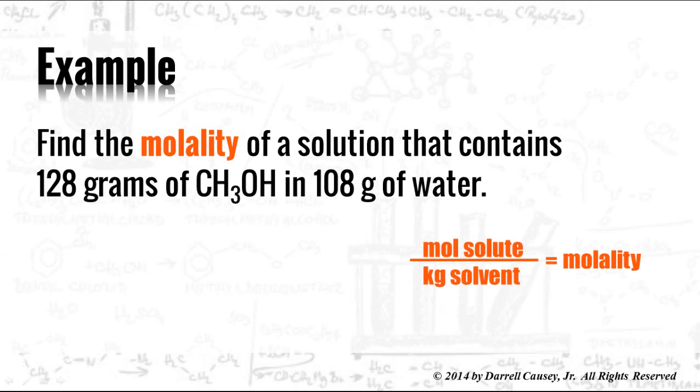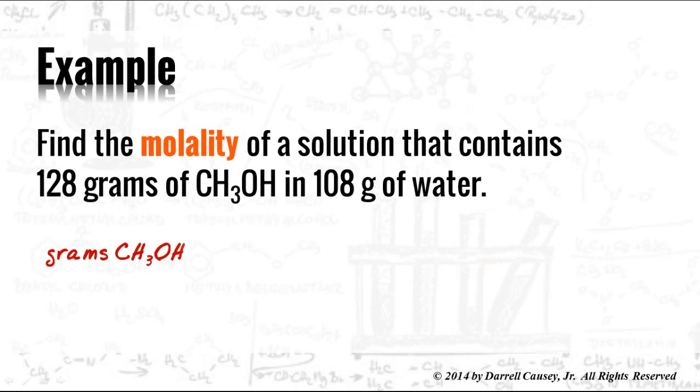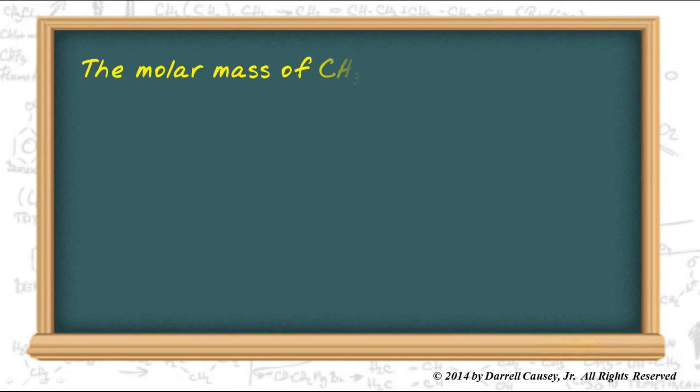First let's get our equation: moles of solute per kilogram of solvent equals molality. The first thing we'll do is take grams of methanol, the solute, and turn it to moles using the molar mass. Then we'll take the grams of water and convert that to kilograms by moving the decimal point three places to the left. To the blackboard.